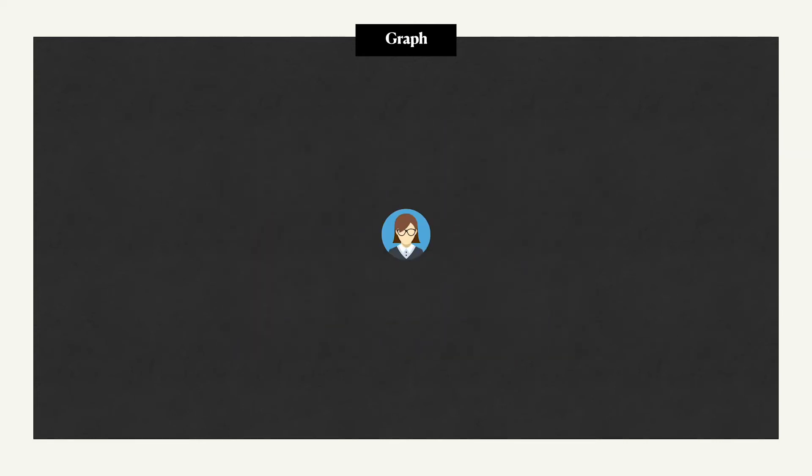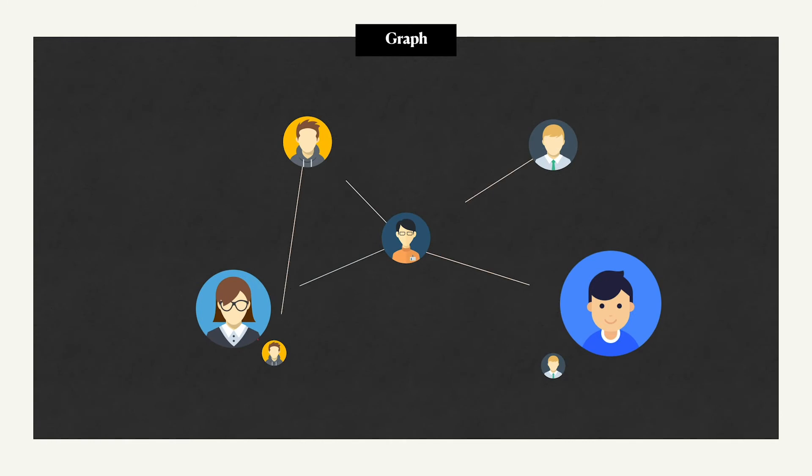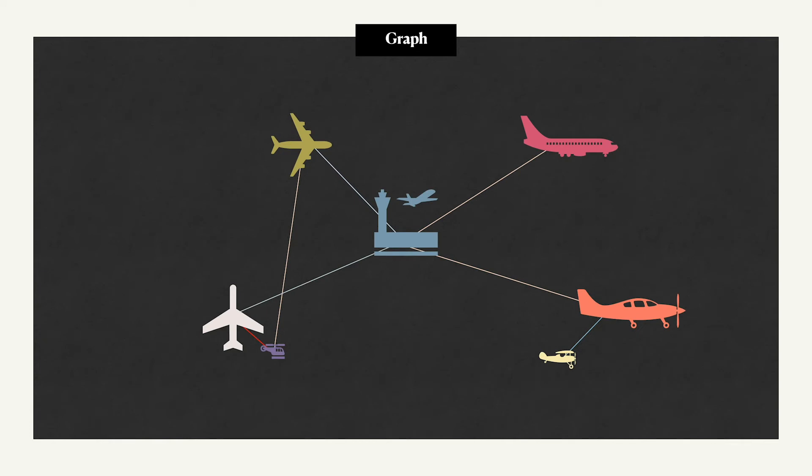Any binary relationship can be represented with a graph. Social networks like Facebook and Twitter can be represented by graphs. Roads, flights, communication lines are all examples of things you can use a graph data structure to represent, making the graph a very important data structure to learn.